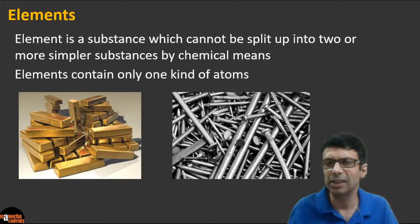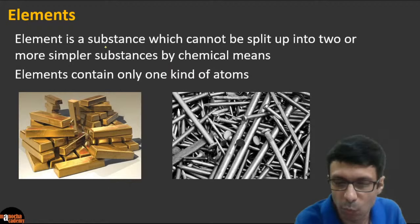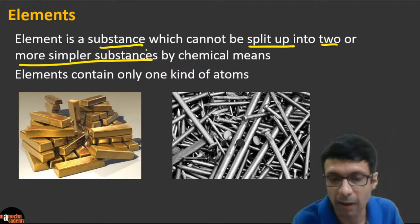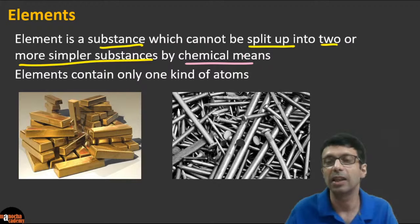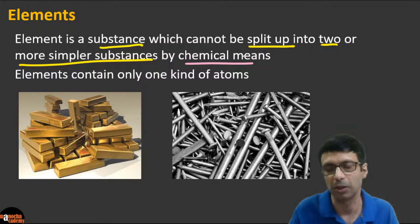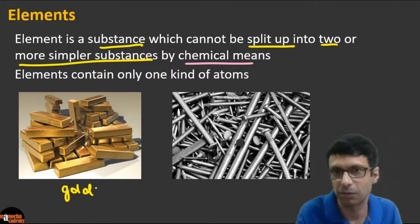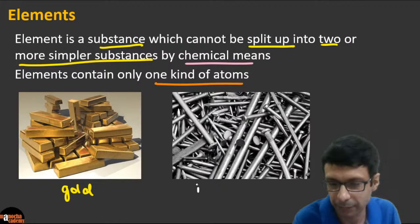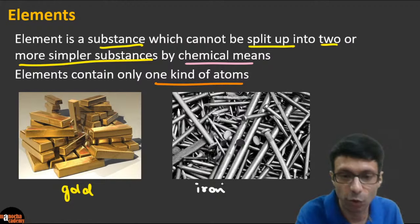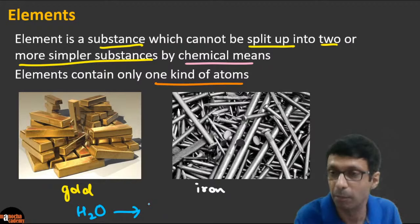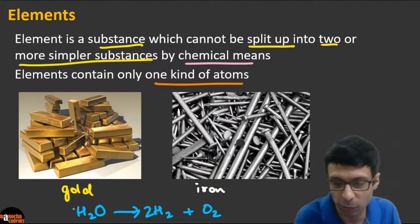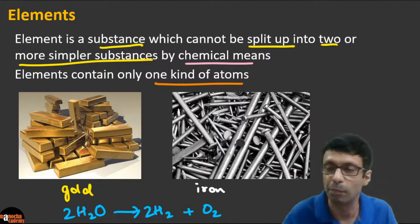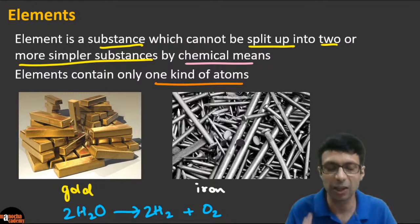An element is a substance which cannot be split up into two or more simpler substances by chemical means. Not only by physical methods — even if you do a chemical reaction, you cannot separate a metal into simpler substances. For example, you cannot split gold into simpler substances. Gold contains only one kind of atom.